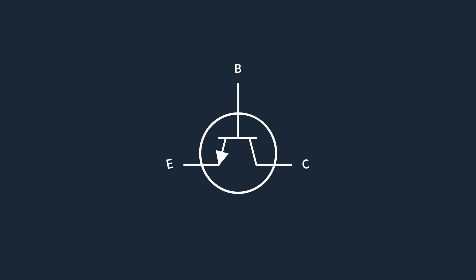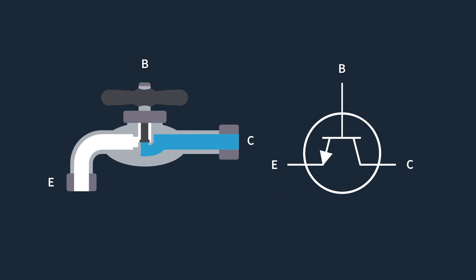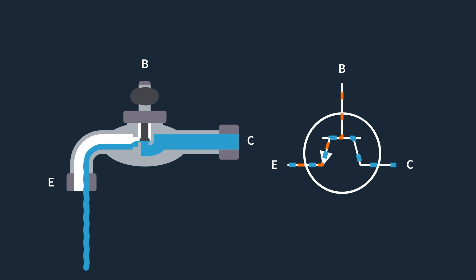The water spigot analogy may be common, but it's used for good reason. It's one of the best ways to understand how a small base current controls a much larger current through the transistor. If we look at a water spigot, the base acts like the handle, and a small amount of current at the base is as if we were turning the handle. This controls a larger current between the collector — which would be our water source — and the emitter, which is our output.